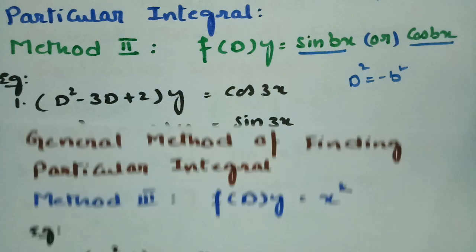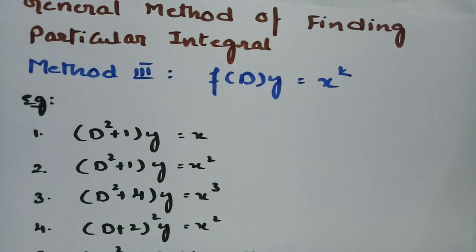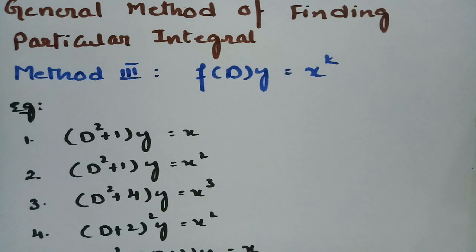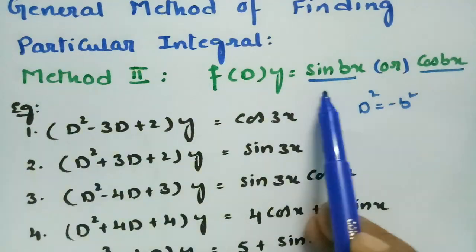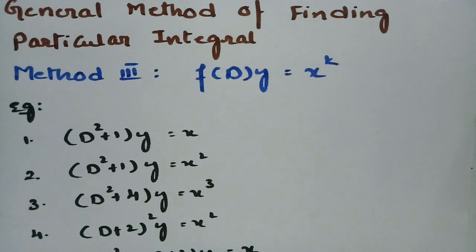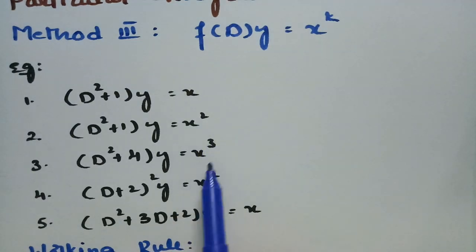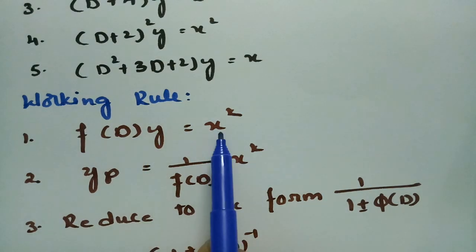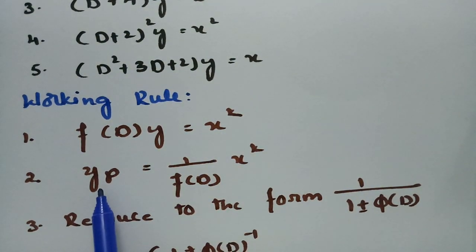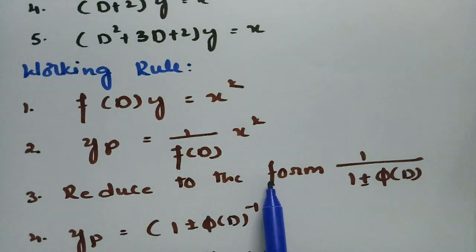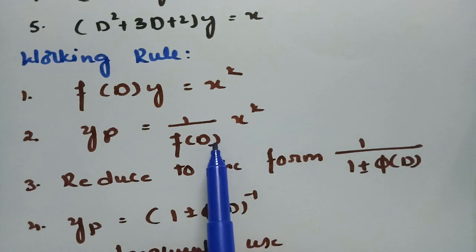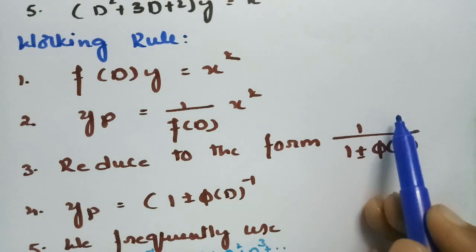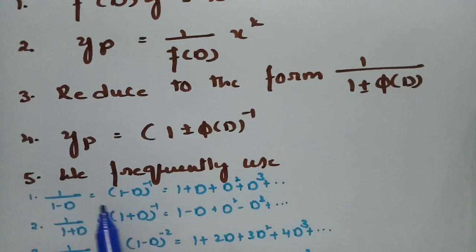Method 3 is for algebraic expressions. If the function is algebraic — questions of the form x, x², x³, 2x, 3x, x^k — the working rule is: y_p = 1/f(D) · x^k. We reduce this by taking a common factor so that the denominator reads (1 + φ(D)), then raise it to the numerator and expand using standard binomial-type series expansions.